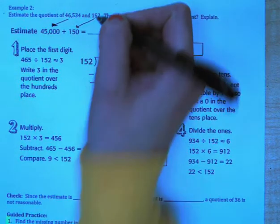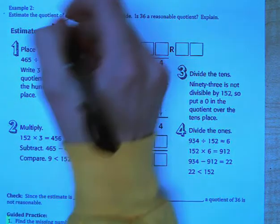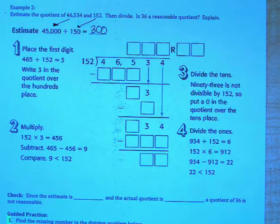As we move forward in math you're going to find that compatible numbers are extremely important. So when we divide 45,000 divided by 150 we get 300. Now it is time to move on to see if our estimate is reasonable.